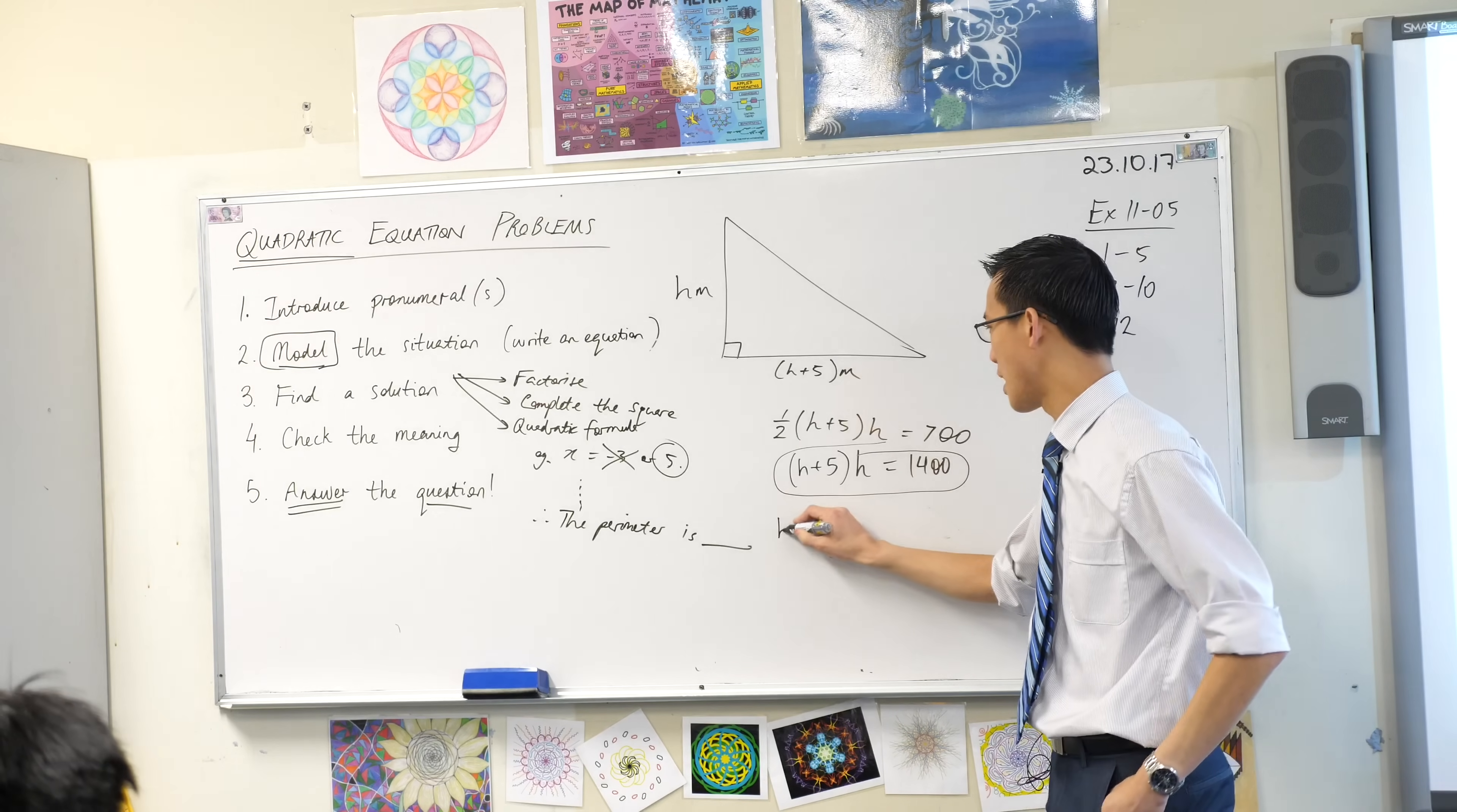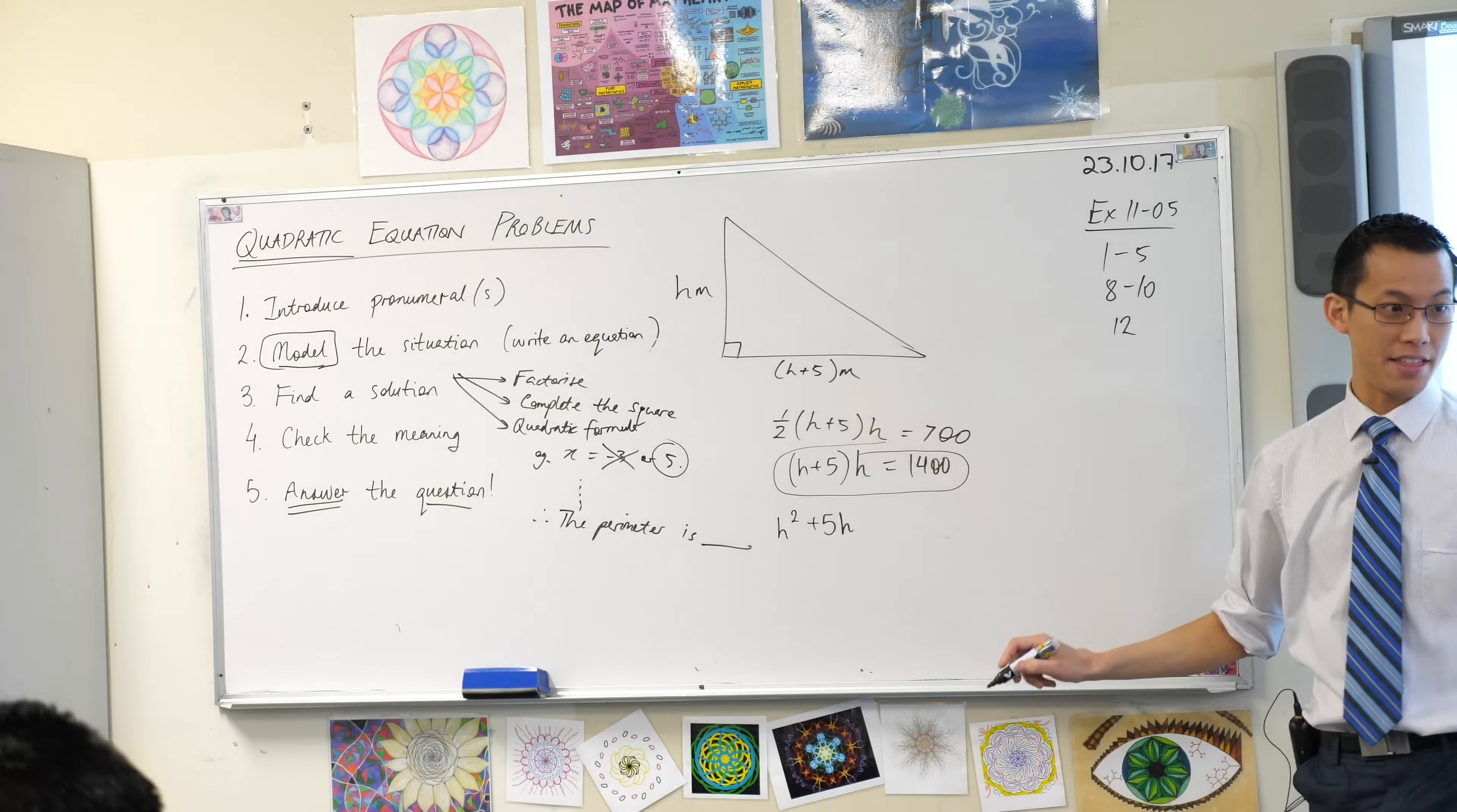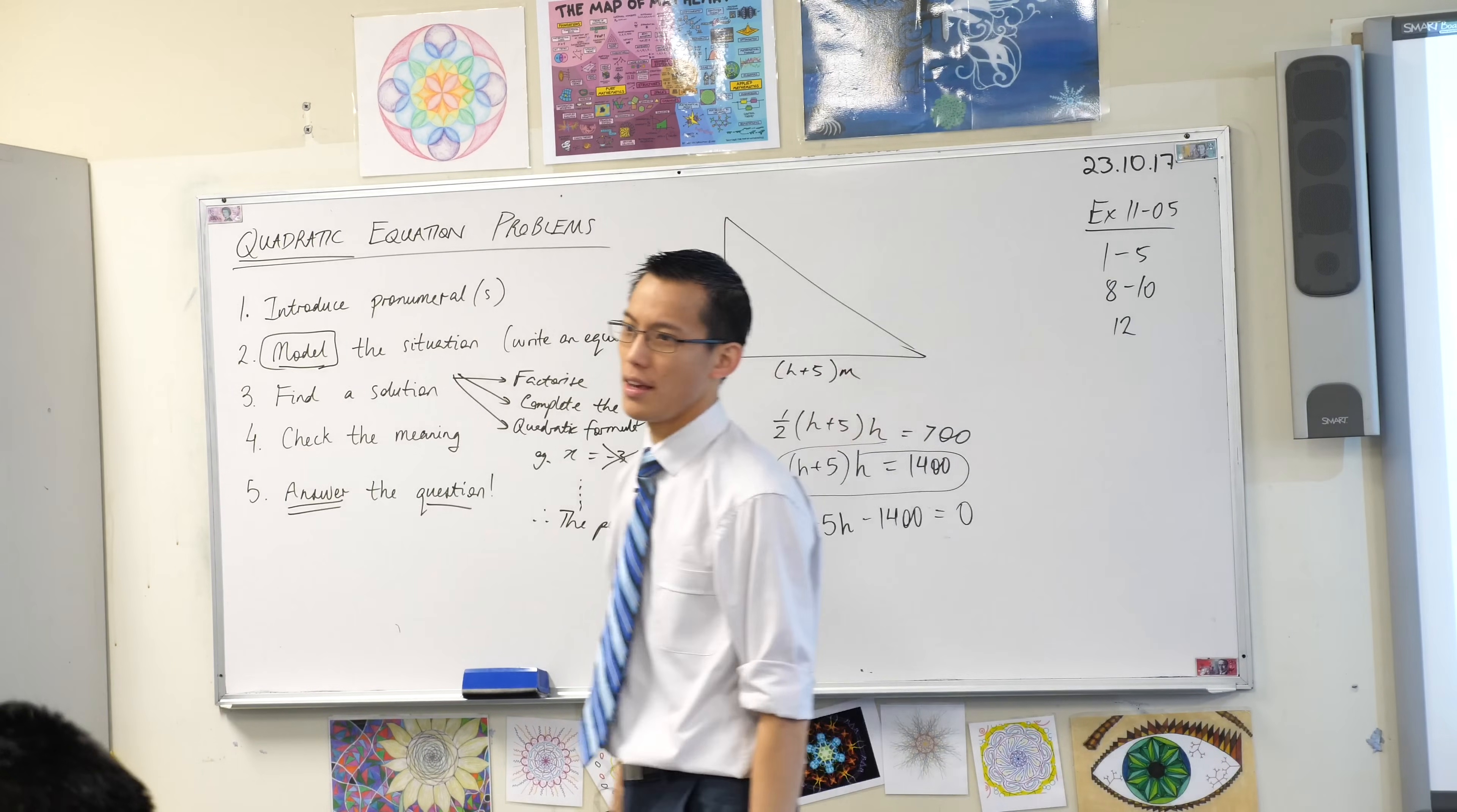I can expand this at the same time. That gives me h squared plus five h. And then I'm going to subtract. Like so.